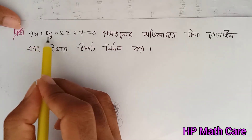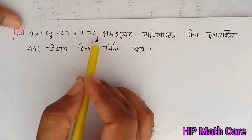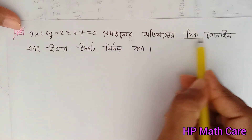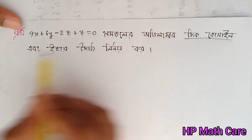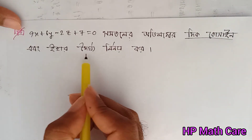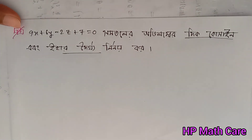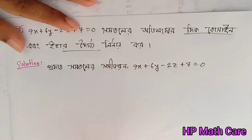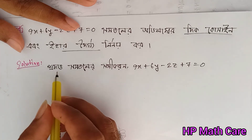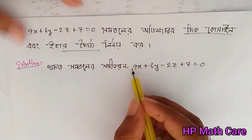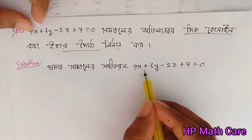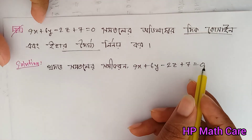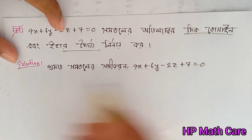9x plus 6y minus 2z plus 7 equals 0. This is the same thing. 2x equals 0. Now let's see. How is 9x plus 6y minus 2z plus 7 equals 0? Let's see what we have to do in this distance.